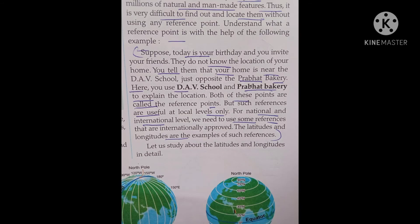Suppose today is your birthday and you invite your friends. They do not know the location of your home. You tell them that your home is near the Divay School, just opposite the Prabhat Bakery. Here you use Divay School and Prabhat Bakery to explain the location — both of these points are called reference points. Such references are useful at only local levels, but for national and international levels we need to use references that are internationally approved. Latitudes and longitudes are examples of such references.